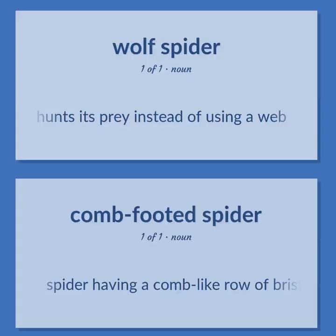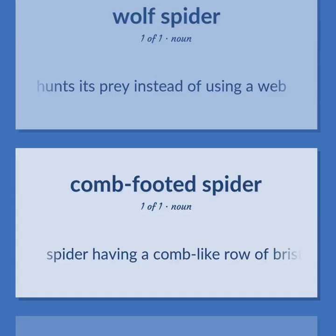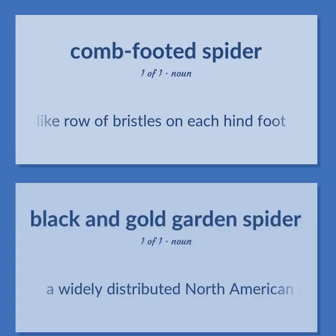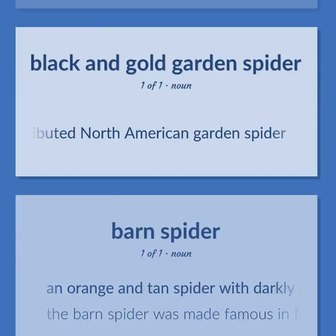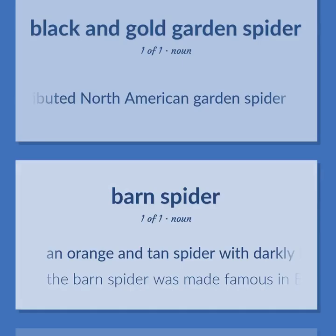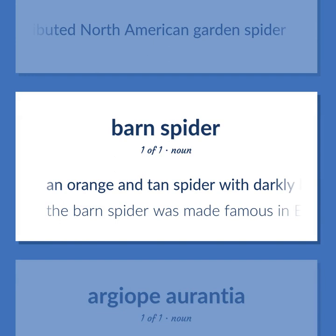Ground spider that hunts its prey instead of using a web. Spider having a comb-like row of bristles on each hind foot. A widely distributed North American garden spider. An orange and tan spider with darkly banded legs that spins an orb web daily.